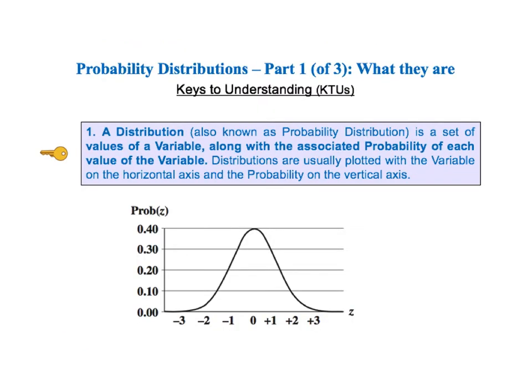Let's now begin our detailed explanation of each key to understanding. A distribution, also known as a probability distribution, is a set of values of a variable along with the associated probability of each value of the variable. For example, here is a graph of a particular distribution known as the standard normal distribution. The values on the horizontal axis are those for the variable z. We can see that the probability of z equals 0 is about 40%. And that the probability of z equals negative 1 or plus 1 is about 20%.